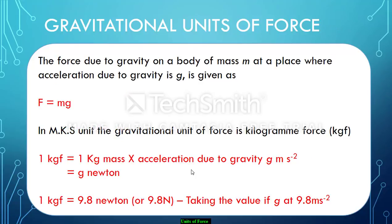Now gravitational units of force. The force due to gravity on a body of mass m at a place where acceleration due to gravity is g is given as F = mg. Here, acceleration is substituted by g. What is acceleration due to gravity? Gravity is that pull or the acceleration with which the earth tries to pull a body or an object towards itself. In MKS unit, we can see that 1 kgf is 1 kg mass into acceleration due to gravity g in meter per second square.